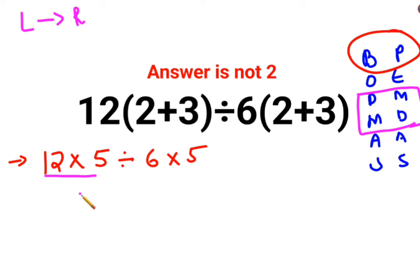So first we will do what? 12 into 5, which is what? 60. Divide. Now please understand, whenever there is a division sign, we just have to apply the rule of KCF.